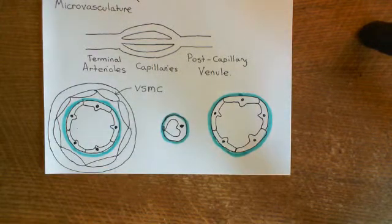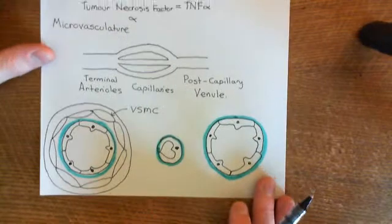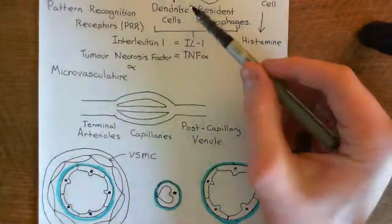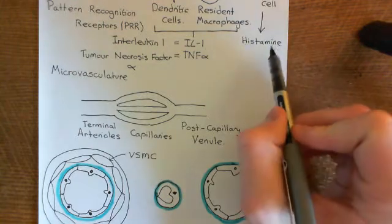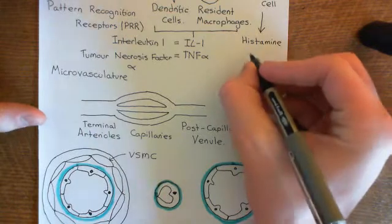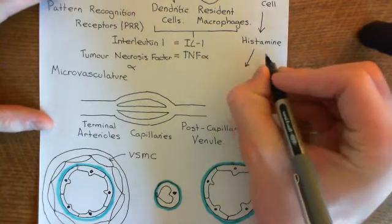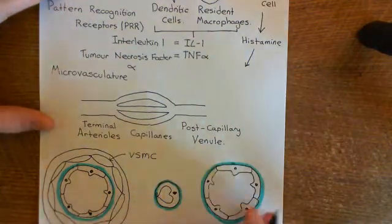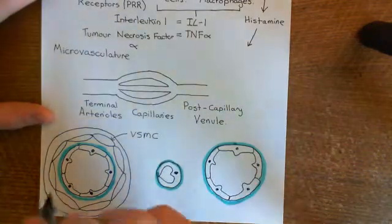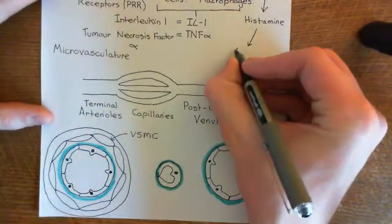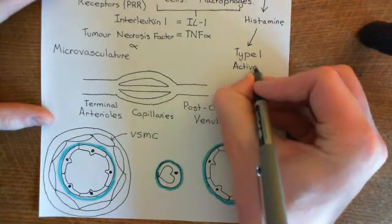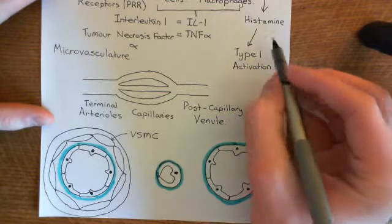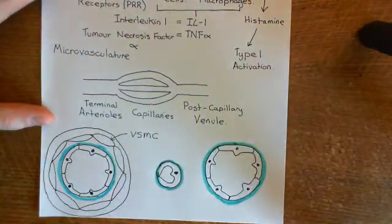These are the three types of blood vessel within all tissues of the body, and these are going to be the target of the molecules released from the sentinel cells. The dendritic cells and resident macrophages both released interleukin-1 and tumor necrosis factor alpha, whilst the mast cells released histamine. Histamine is going to act quicker than interleukin-1 and tumor necrosis factor alpha. They're both going to diffuse over to the endothelial cells of these three types of blood vessel and cause activation, but they're going to cause different types of activation. Histamine is going to cause what is known as type 1 activation of the endothelial cells, which occurs within minutes of the histamine having bound to its H1 receptor on the surface of the endothelial cells.